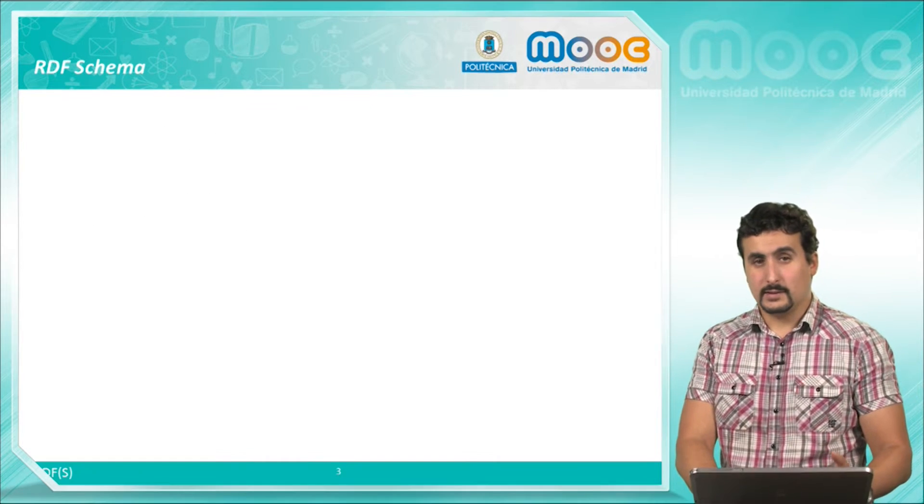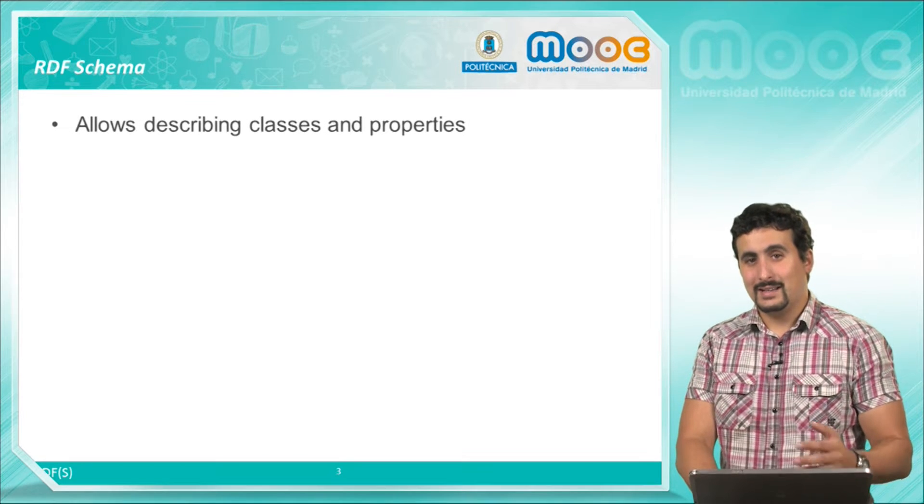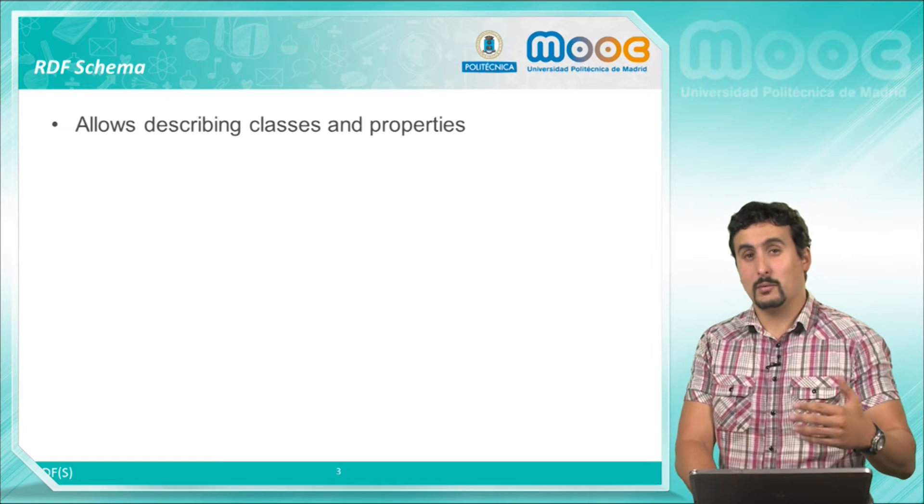RDF-S or RDF Schema is an extension of RDF. It allows to describe the classes and properties to be used in our dataset, generating a semantic model for it.